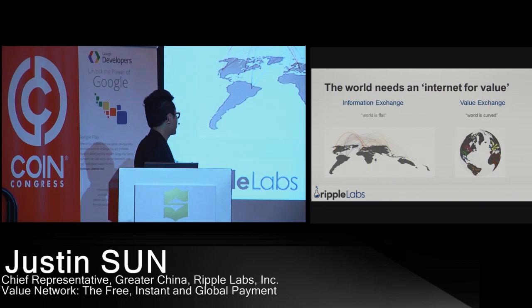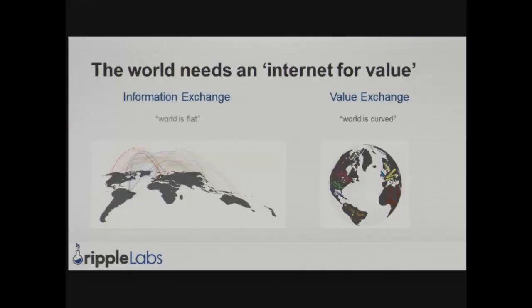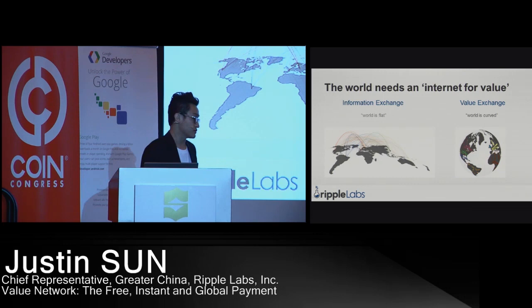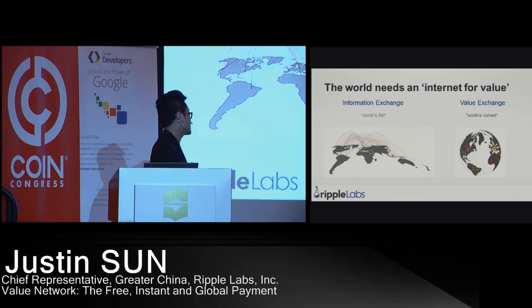Right now the world needs an internet of value. When we think about the internet, we think of it as a network of information — email can be sent free and instantly. So why can't value also be sent free and instantly? Information exchange has made the world a flat place, and we expect that value exchange can do the same — right now the world is curved, but we can make it flat.